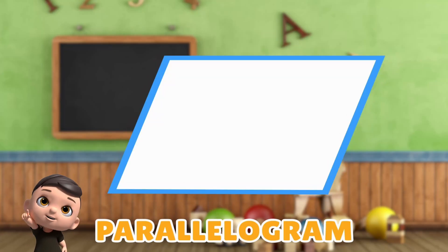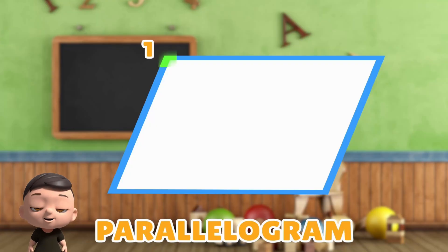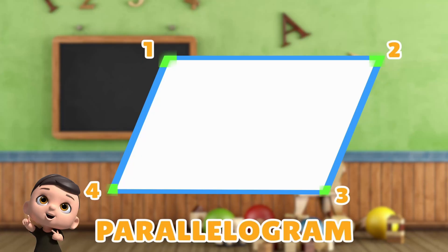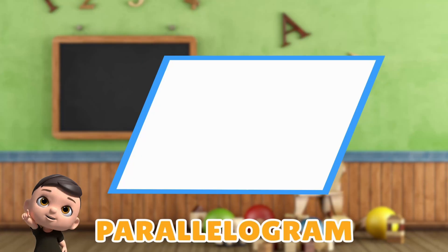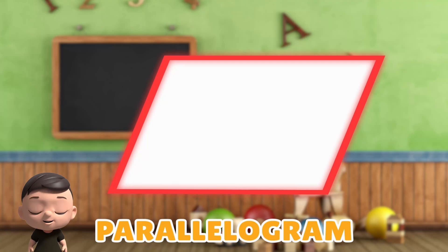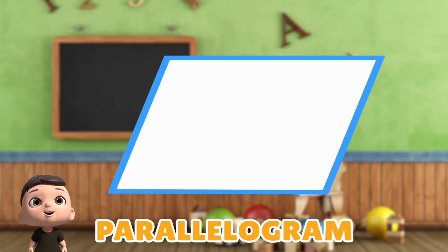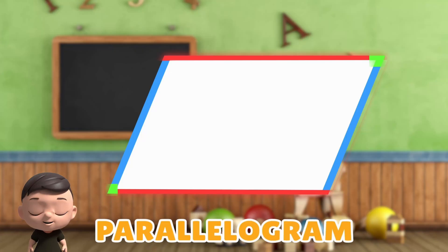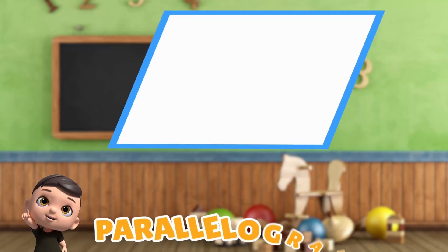Now let's count the vertices of a parallelogram. 1, 2, 3, 4. Parallelogram has 4 vertices. So we can say that a parallelogram has 4 sides and 4 vertices. A parallelogram is a shape where opposite sides are equal and parallel, and the angles can be slanted.